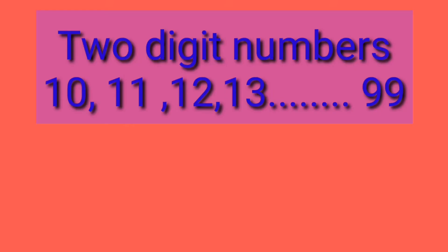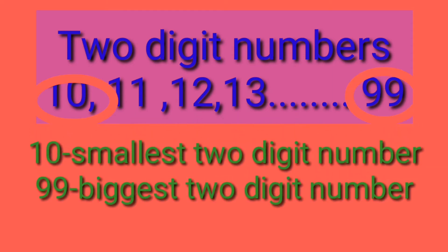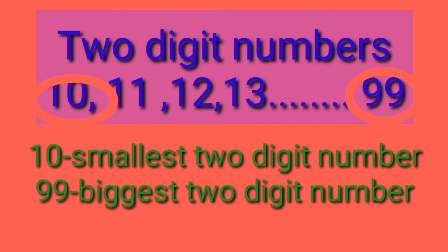The two digit numbers are 10, 11, 12, 13, up to 99. In these numbers, 10 is the smallest two digit number and 99 is the biggest two digit number.